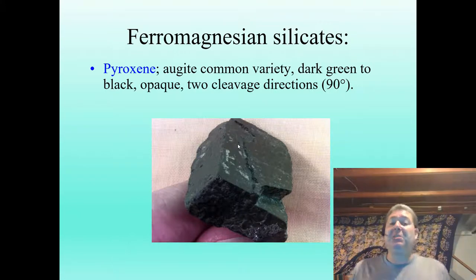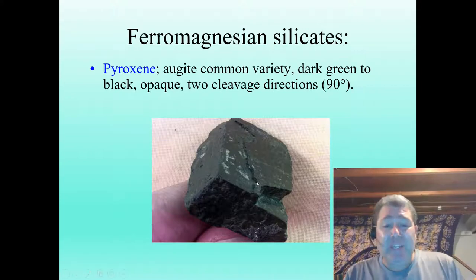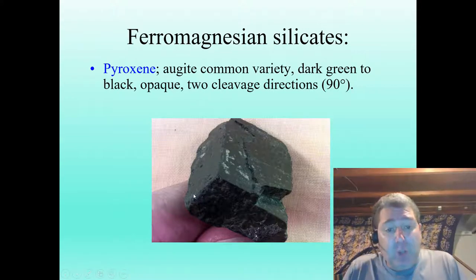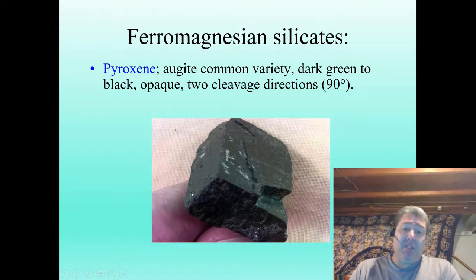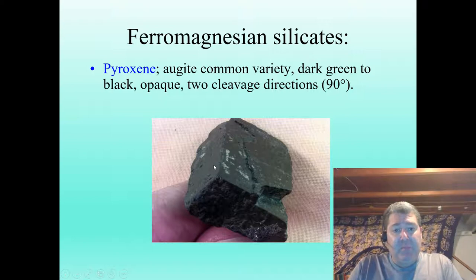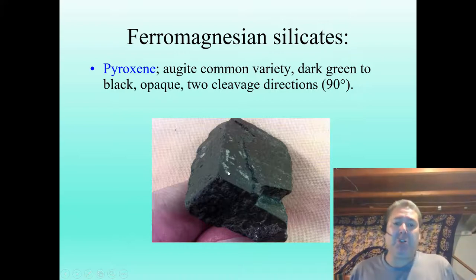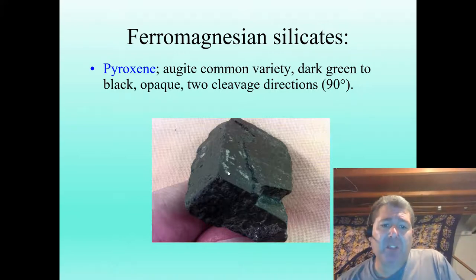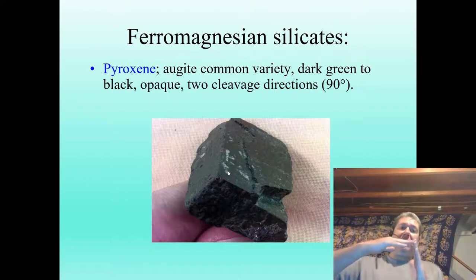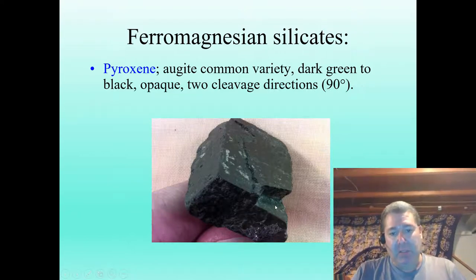Pyroxene — augite being a very common variety — is a dark green to black ferromagnesian mineral, sometimes with a greenish hue. It has two directions of cleavage. This is not a metallic mineral in terms of luster — it would appear transparent if sliced thin enough for a microscope slide. Pyroxenes have two directions of cleavage: prismatic cleavage at 90 degrees to each other.